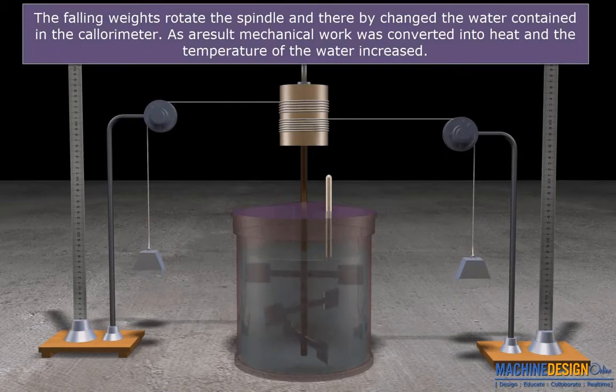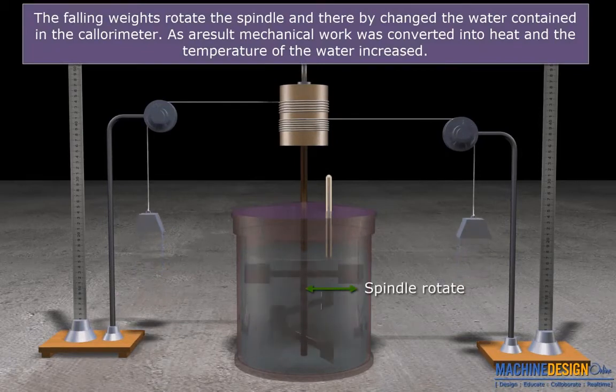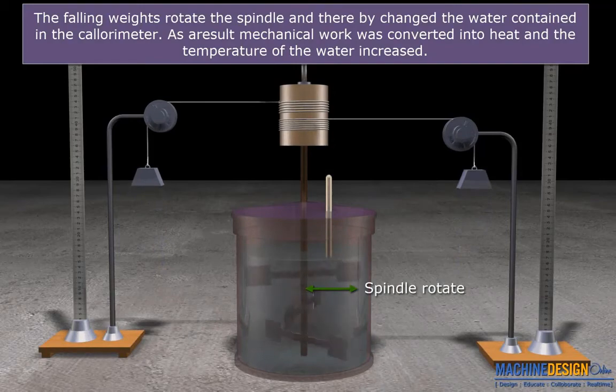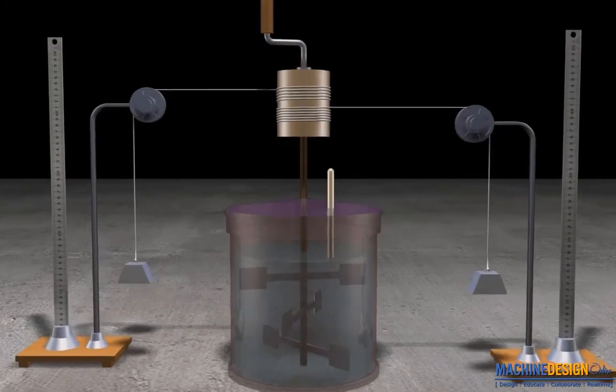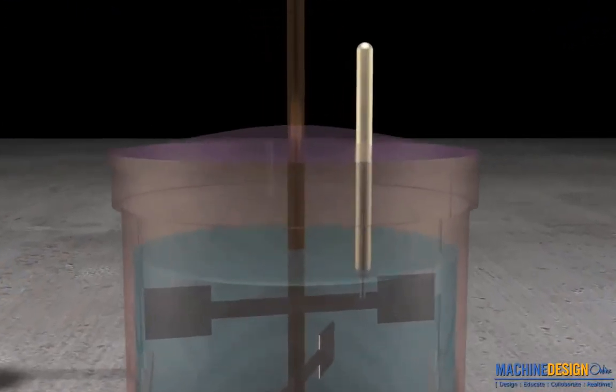The falling weights rotated the spindle and thereby churned the water contained in the calorimeter. As a result, mechanical work was converted into heat and the temperature of the water increased.